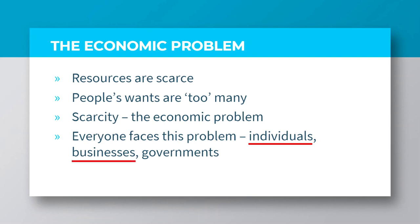Businesses and governments also desire to satisfy numerous economic goals. Businesses want factories, machinery, warehouses and other things that would help them achieve their production targets. Governments want to provide ultra-modern schools and hospitals, highways and other social services.